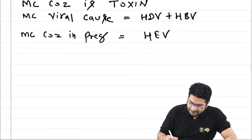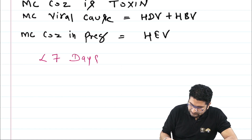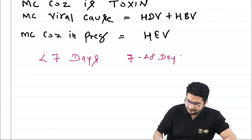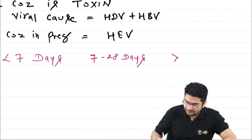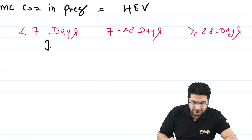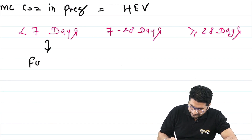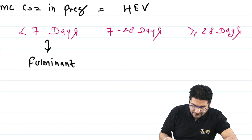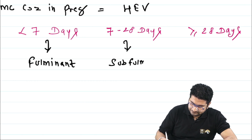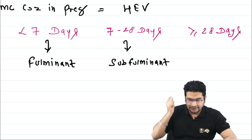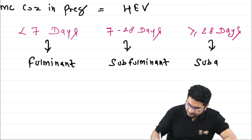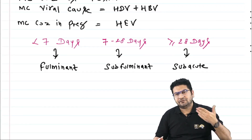Based on duration, acute liver failure is classified as follows: if it develops in less than seven days, it is called fulminant liver failure; if it develops in seven to 28 days, it is called sub-fulminant liver failure; and if it develops after 28 days, it is called subacute liver failure.